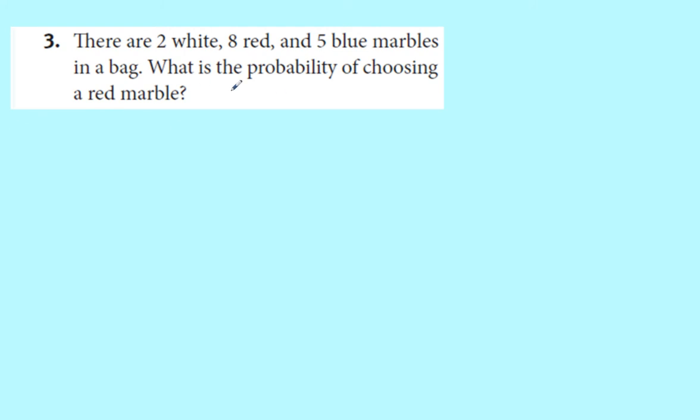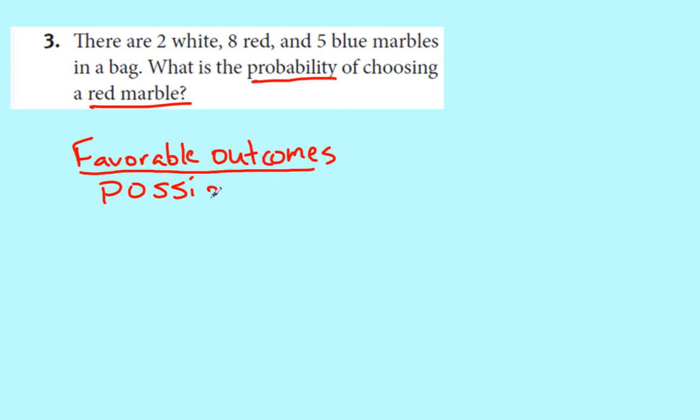We're just going to go over a few more. Number three was talking about probability, and in this case, probability of getting a red marble. In case you forgot, probability is always just the ratio of favorable outcomes to possible outcomes. Which basically means comparing what we want to have happen to what is possible and what could possibly happen.